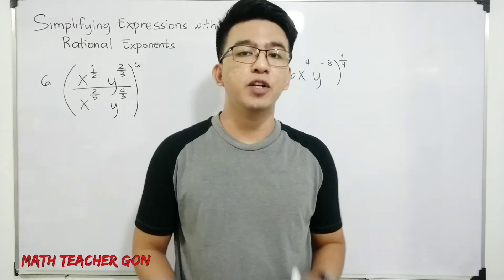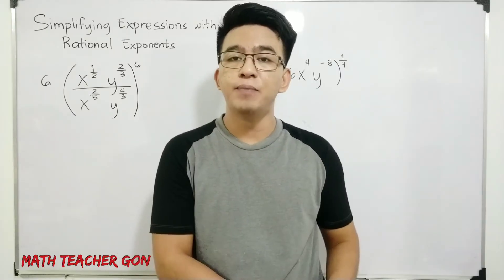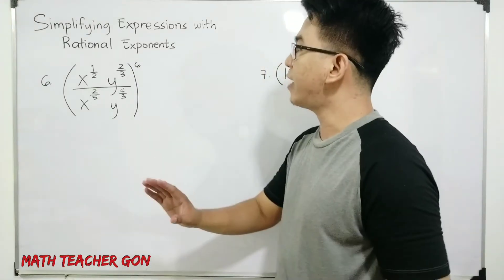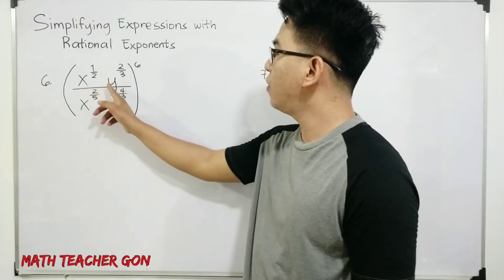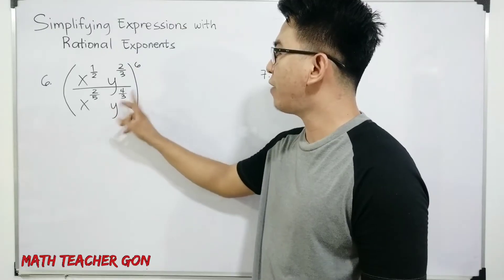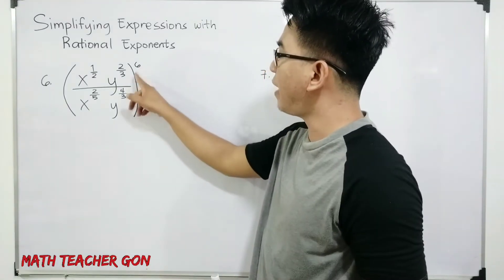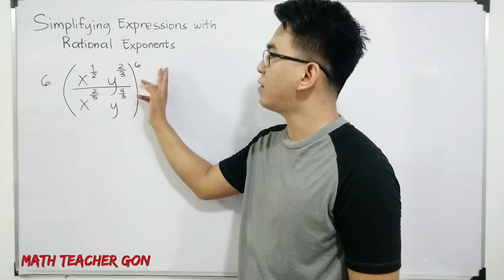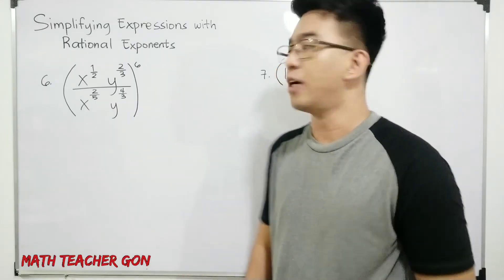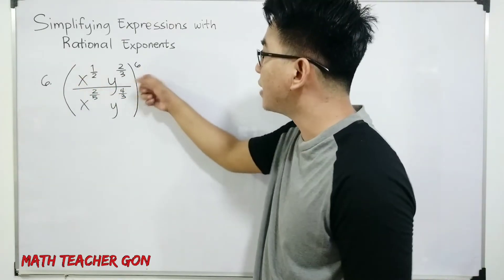Now this is the second part of our discussion on how to simplify expressions with rational exponents. Again, when we say rational exponents, these are exponents in fractional form. Let's continue with item number 6. We're given x raised to 1 half, y raised to 2 thirds, over x raised to 2 over 5, y raised to 4 over 3, all raised by 6. What I'm going to do here is simplify the expression inside the parentheses first, before applying the exponent outside.